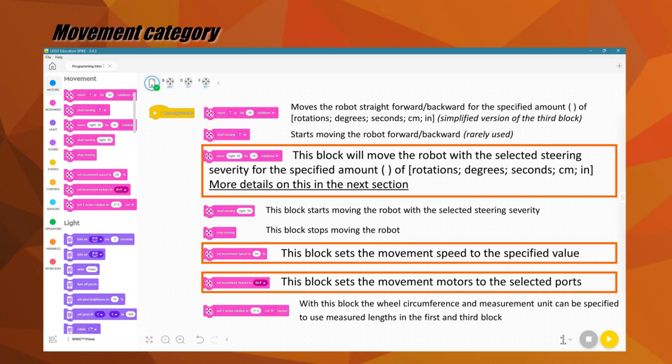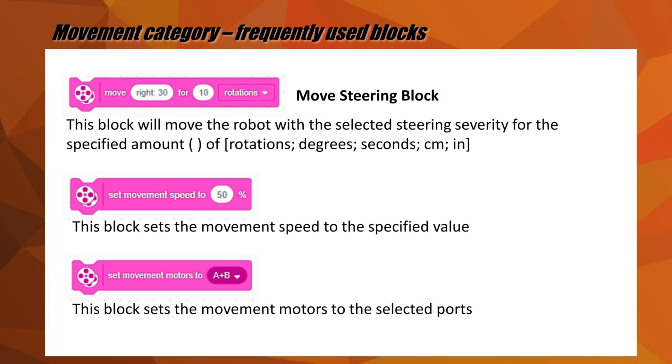The pink category is called the movement category. For our programming, we typically use what we call the move steering block, which moves the robot in a selected steering severity for a specific amount of rotations, degrees, seconds, centimeters, or inches. Another useful movement block is the one to set a specific movement speed. At the beginning of the program, you want to use the block for assigning the movement motors to selected ports.